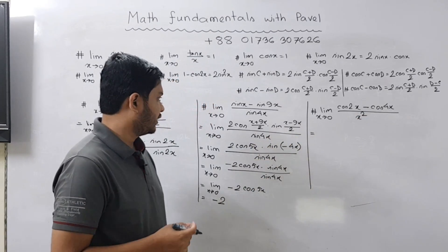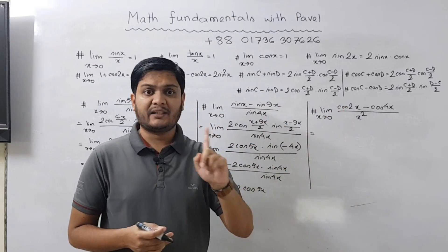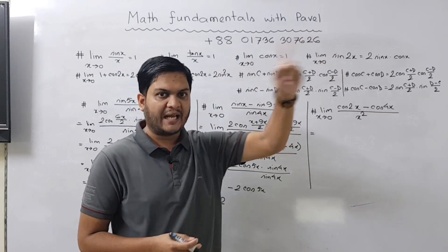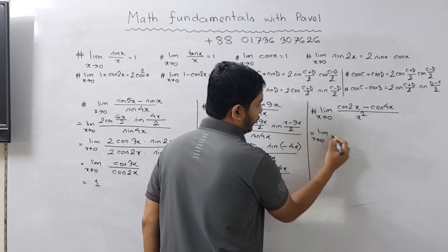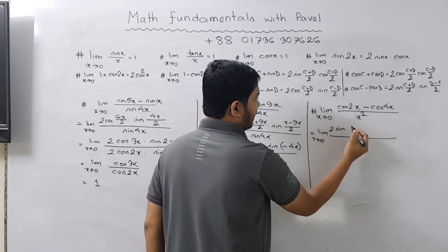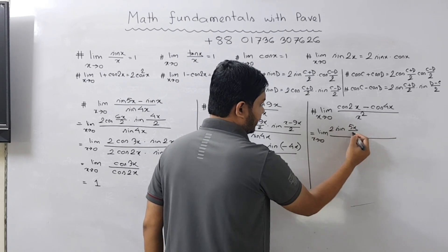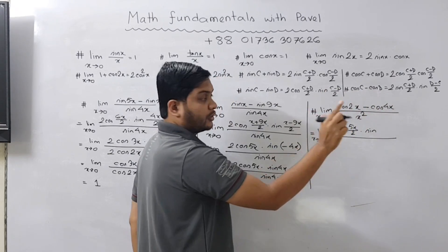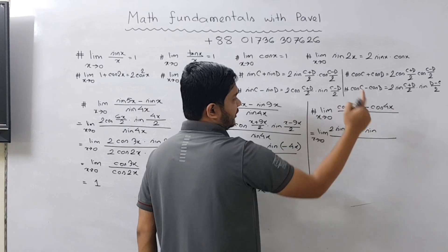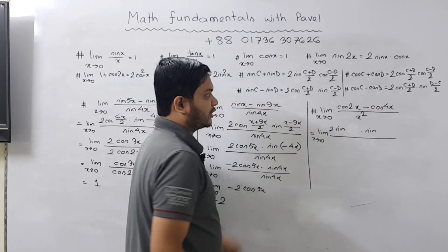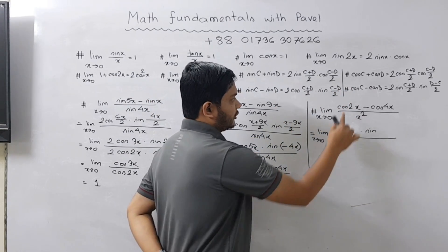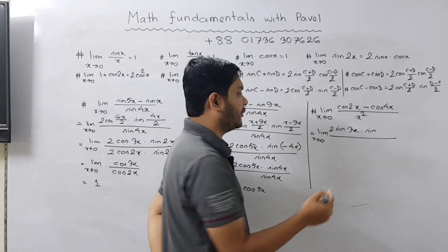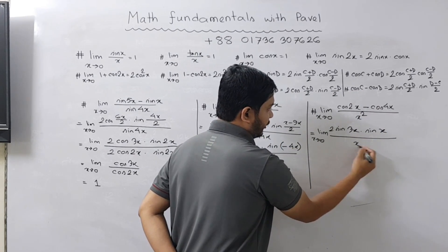Now let us solve the next problem using cos C minus cos D. For cosine formulas both terms are similar, and with minus the cosine becomes sine. Applying the formula: 2 sin((2x+4x)/2) times sin((4x−2x)/2) = 2 sin(6x/2) times sin(2x/2) = 2 sin(3x) times sin(x), divided by x squared in the denominator.